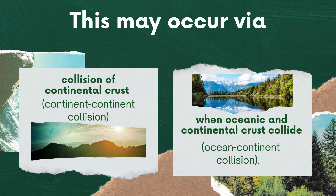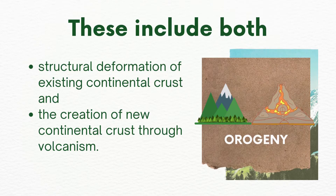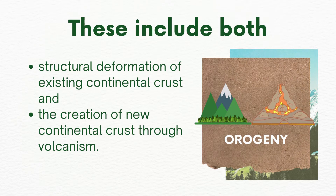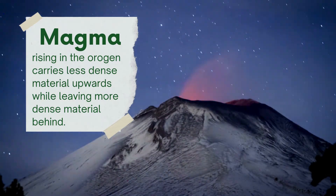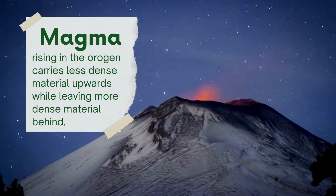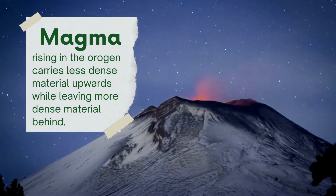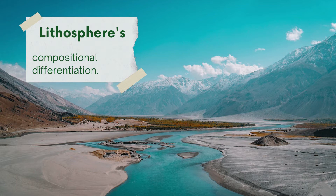This may occur via collision of continental crust, i.e., continent-continent collision, or when oceanic and continental crust collide, which is ocean-continent collision. These include both structural deformation of existing continental crust and the creation of new continental crust through volcanism. Magma rising in the orogeny carries less dense material upwards, leaving more dense material behind, resulting in compositional differentiation of Earth's lithosphere.